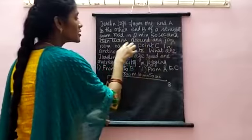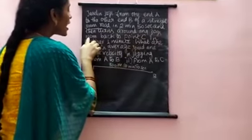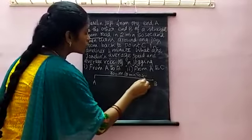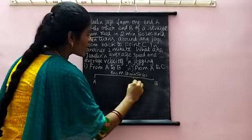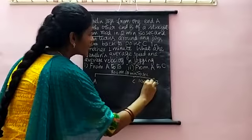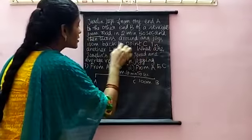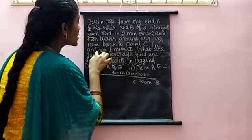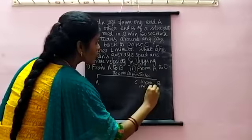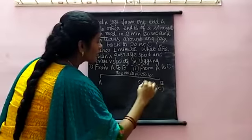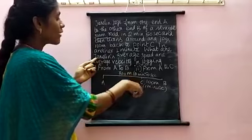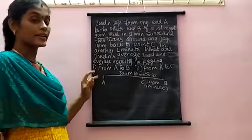Then she turns around and jogs 100 meters back to the point C. The distance between B and C is 100 meters, and she takes another 1 minute to cover this distance. What are Jocelyn's average speed and average velocity in jogging?